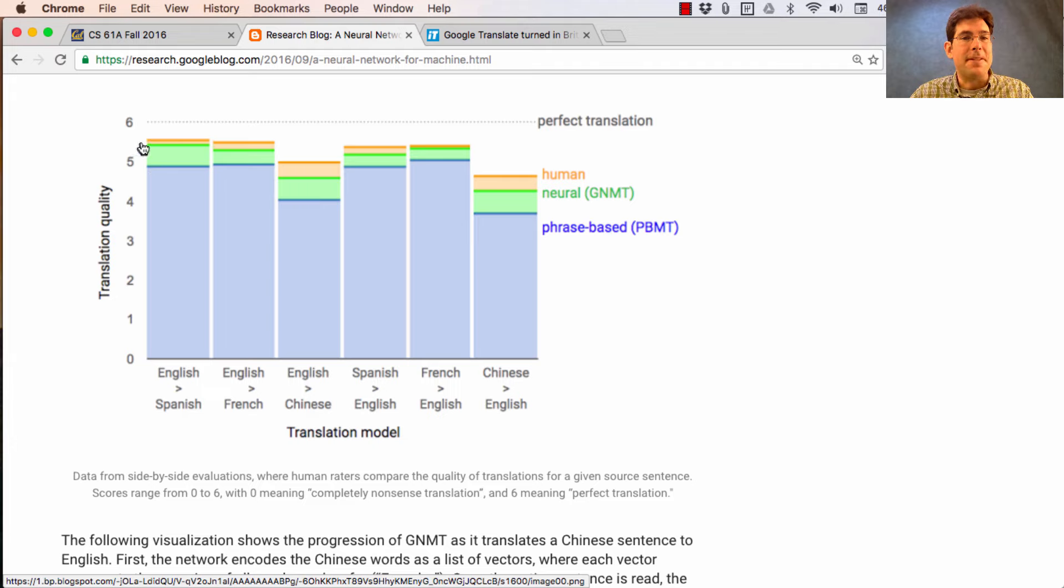And then they asked humans to translate some sentences as well. That's the orange bar. And the brand new system, the green bar, you can see is approaching human level accuracy in terms of human judgments of translation quality. So they just showed translations to humans and said, please rate one from each of these three categories on a scale of 0 to 6, where these were rated by bilingual speakers who got to see the original sentence being translated.